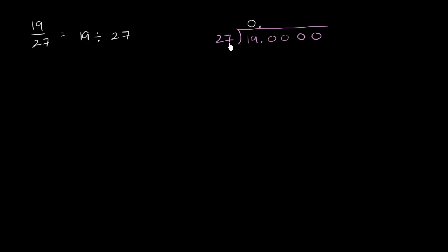27 is roughly 30, a little less than 30. And 30 times 6 would be 180, so let's try it going six times. Let's see if that works out. 6 times 7 is 42. 6 times 2 is 12, plus 4 is 16.